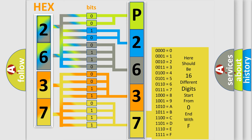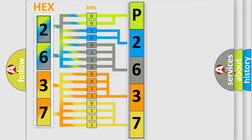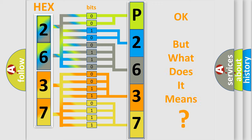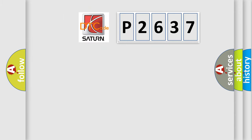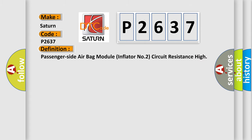We now know in what way the diagnostic tool translates the received information into a more comprehensible format. The number itself does not make sense to us if we cannot assign information about what it actually expresses. So, what does the diagnostic trouble code P2637 interpret specifically? Saturn car manufacturers. The basic definition is: Passenger side airbag module inflator number two circuit resistance high.